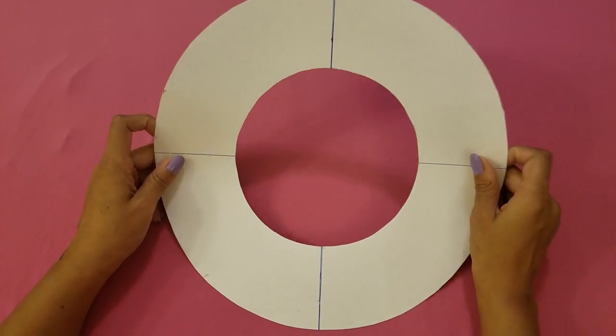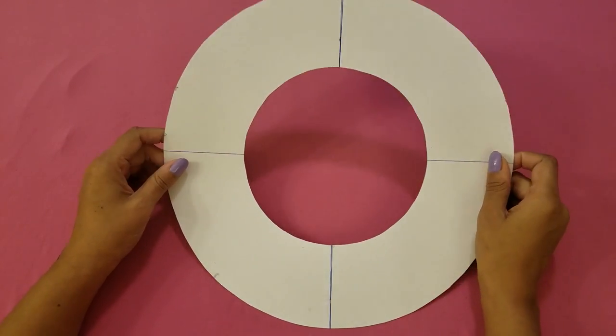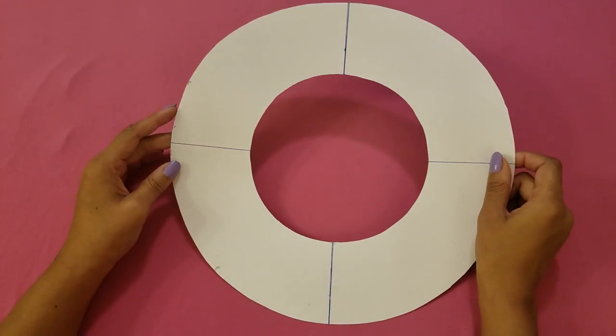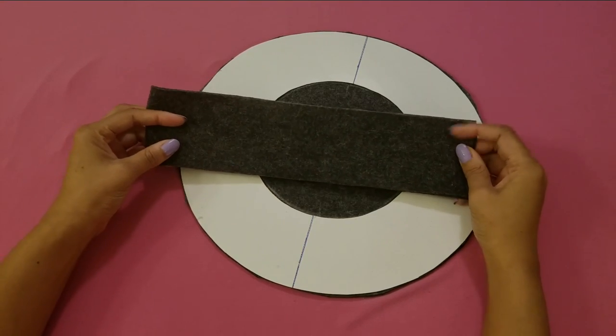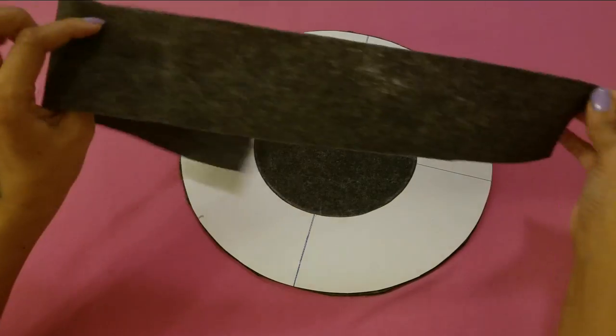Mine is kind of on the big side because I wanted it to be loose and be able to fit over my hair with the wig on top of it. You will need to cut out a 3 inch by 36 inch strip for the brim of the hat.